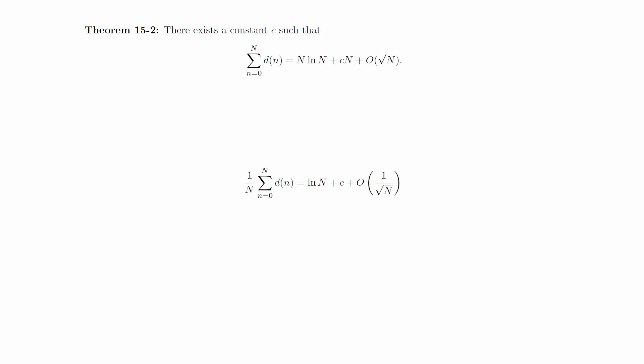If we divide through by n, this says that the average number of divisors is approximately ln of n, plus a constant.